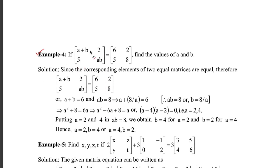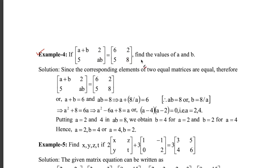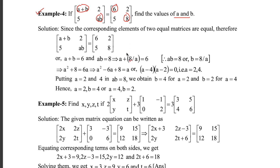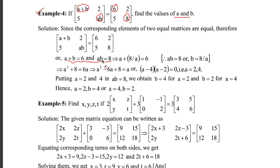In this example, two matrices are equal, so you write corresponding entries as equations: a+b=6 and ab=8. By solving these two equations using substitution — finding a or b from the second equation and substituting into the first — you get a=2 and a=4, giving you the corresponding values of b.